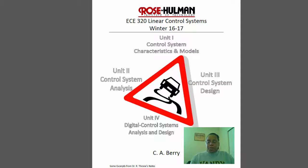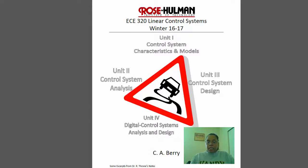Today we will start Unit 1, Lecture 1 on Control System Characteristics and Models. Note that we have four units for the lectures. Unit 1 is Control System Characteristics and Models. Unit 2 is Control System Analysis. Unit 3 is Control System Design. And Unit 4 is Digital Control Systems Analysis and Design. Note that many of these notes are excerpts from Dr. Throne's notes and also several other texts on controls that I use as a reference.